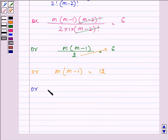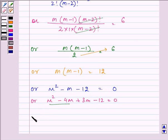Further, this can be converted into a quadratic equation and we have m squared minus m minus 12 is equal to 0. On splitting the middle term, we have m squared minus 4m plus 3m minus 12 is equal to 0.